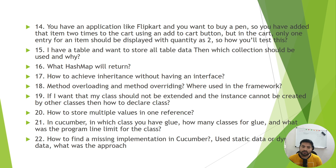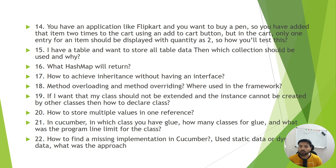How to store multiple values in one reference? Next, related to Cucumber: in which class did you add the glue, how many classes did you glue, and what was the line limit for your class? Gluing connects your step definitions and other things. Next is: how to find a missing implementation in Cucumber — use static or dynamic data? When you have a feature file and execute it, if the step definition for that feature file is not there, it will give an exception, and there you find your missing implementation.